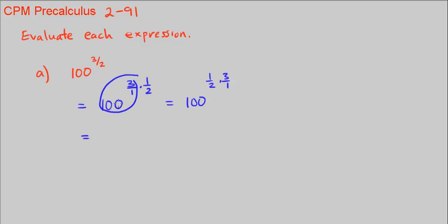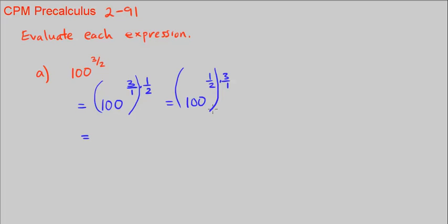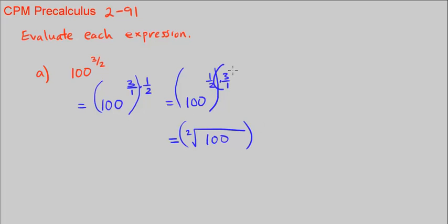We can go ahead and do 100 to the cube first, which makes it a bigger number, or we can look at 100 to the 1 half power first. Which one you choose really depends on the numbers. I know that 1 half is going to make 100 smaller, so I'm going to start there, because 1 half is just taking the square root. And we still have 3 over 1 on the outside as the power.